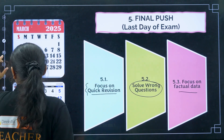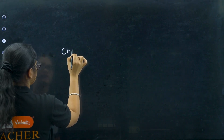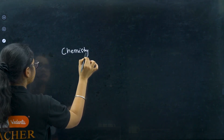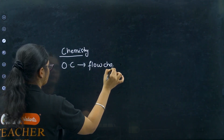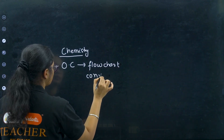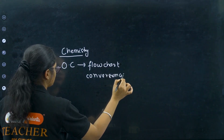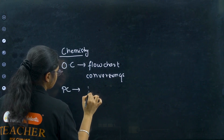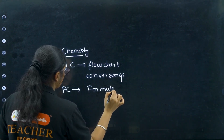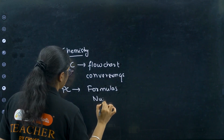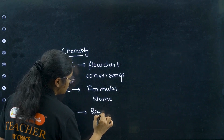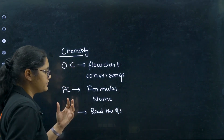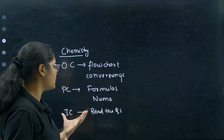I'll give you an idea of how to revise each subject. For chemistry: in organic chemistry, revision is through flowcharts — to remember all the reactions, do conversion questions. For physical chemistry, revise formulas and solve numericals. For inorganic chemistry, read each question and answer and recall it — you have to mug up this part. Coming to biology: focus on diagrams and important terms. Study biology like a story — write the cycle in the form of a flowchart or hierarchy process showing what happens after what.